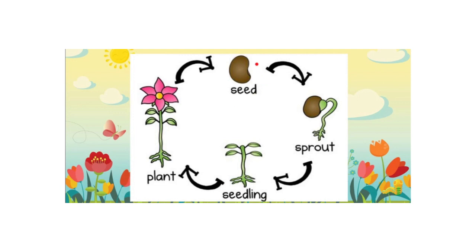It begins with a seed in the soil. Then it grows and becomes a sprout. Then it grows and becomes a seedling. And at the end, it becomes a plant. This is the life cycle of a plant.